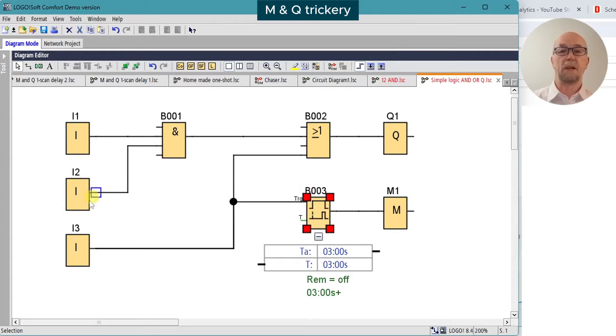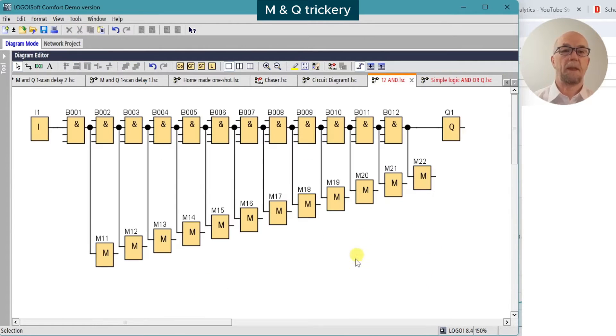Even if the signal on the input terminal changes state between the execution of B2 and B3, similarly the M and Q outputs are held in an image register until the end of the program scan, and then the register is copied to the M's and Q's.